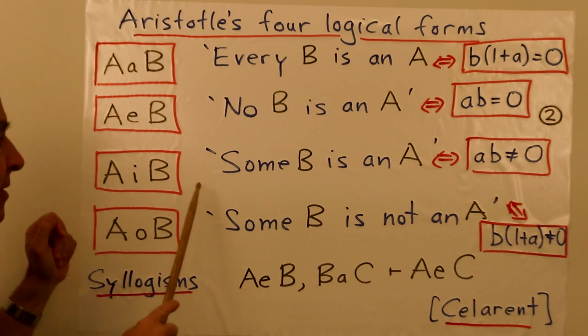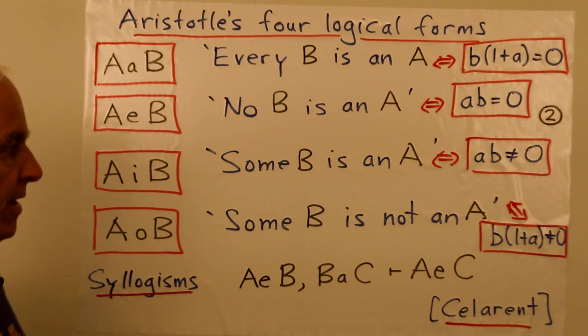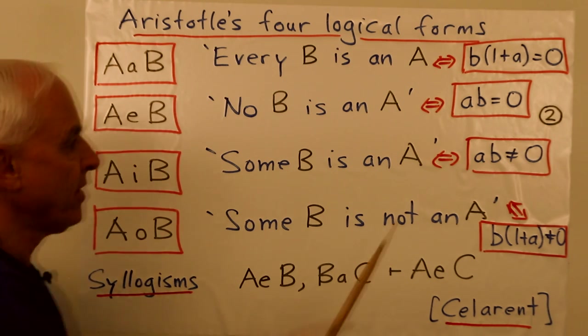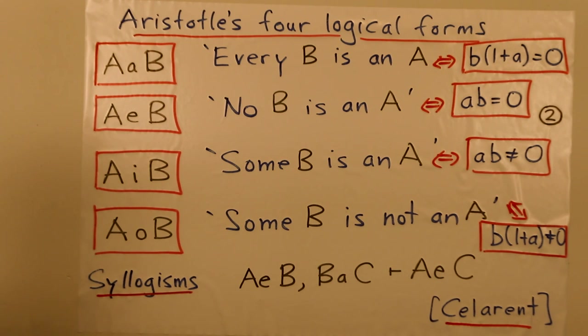And then there's I. A I B means some B is an A. And that's kind of the opposite of this one. So it's represented by A B does not equal zero.